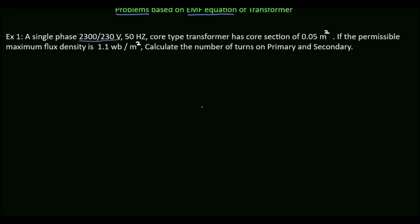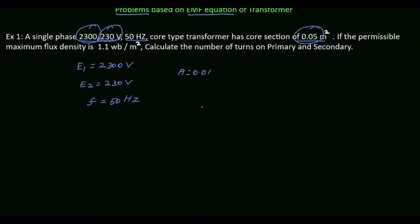The problem: a single phase 2300 by 230 volt, 50 Hz, core type transformer has a core section of 0.05 meter square. Here, 2300V is the EMF induced in the primary side, so E1 = 2300V; 230V is the EMF induced in the secondary winding, so E2 = 230V. The frequency is 50 Hz, the area is 0.05 m², and the permissible maximum flux density BM = 1.1 Weber per meter square. We need to calculate the number of turns on the primary N1 and the number of turns on the secondary N2.